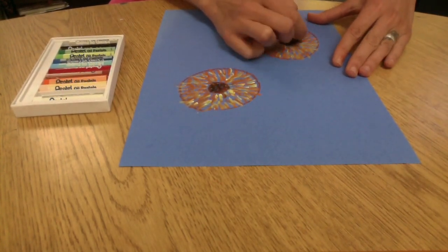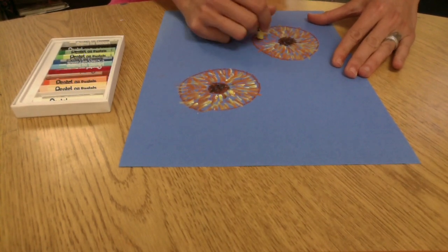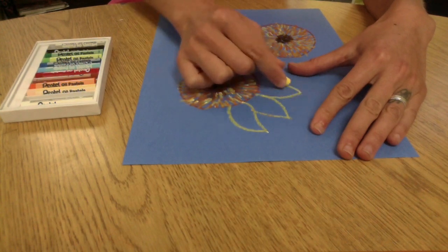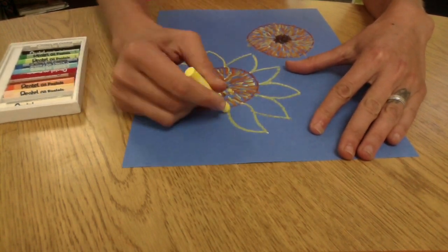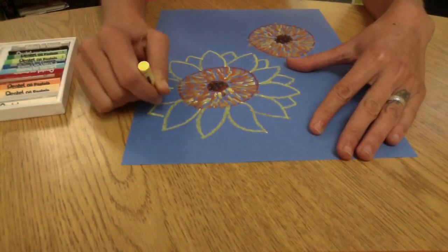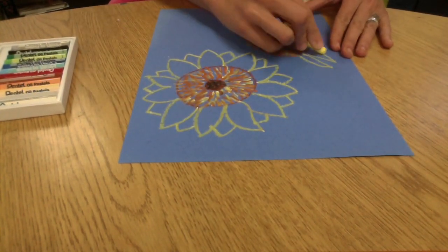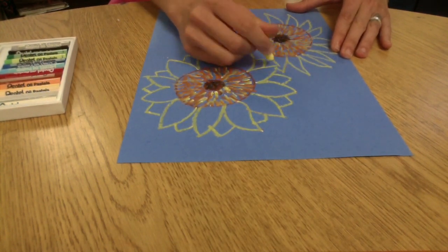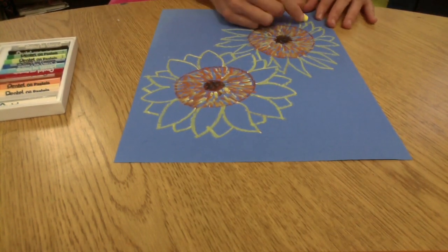So I'm using orange and brown and a little yellow on top, and then I'm going to start my petals. So go all the way around with your petals, almost like an M shape, a little curved M, and then you can make smaller petals behind your big petals.